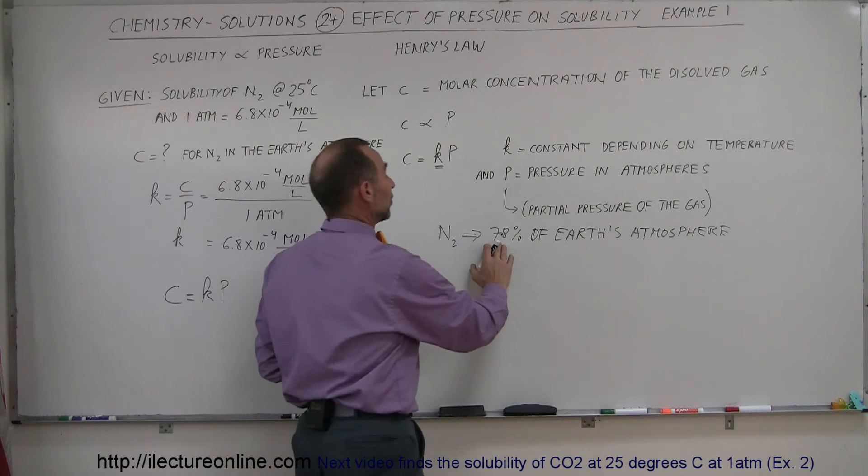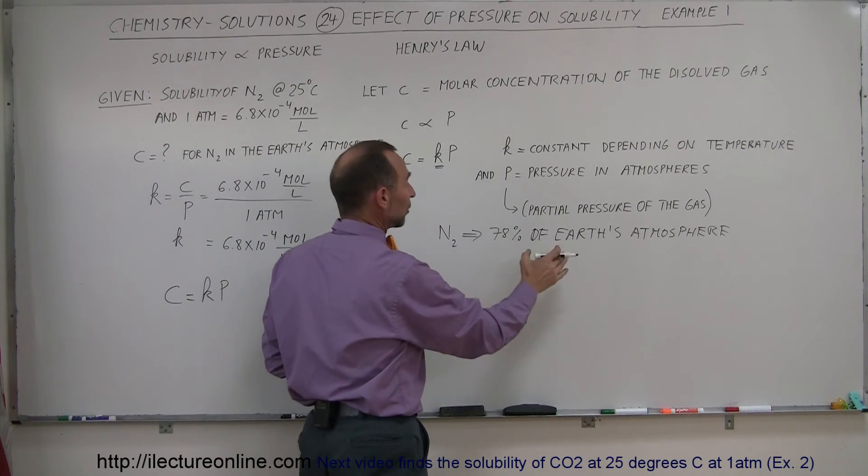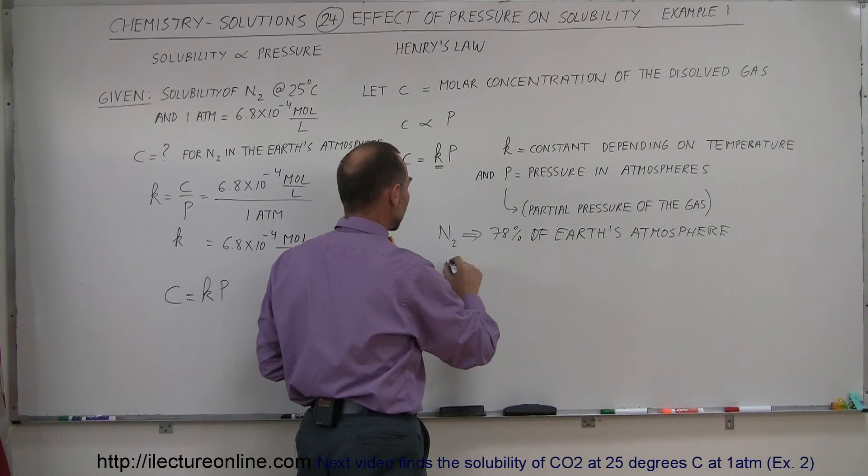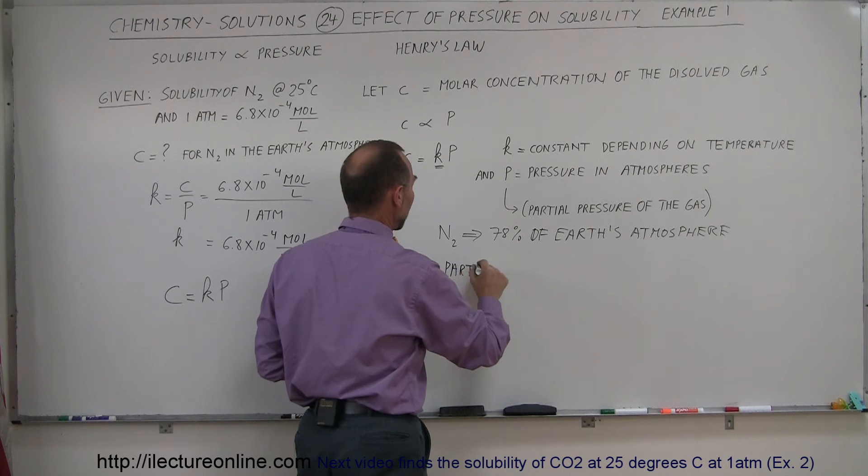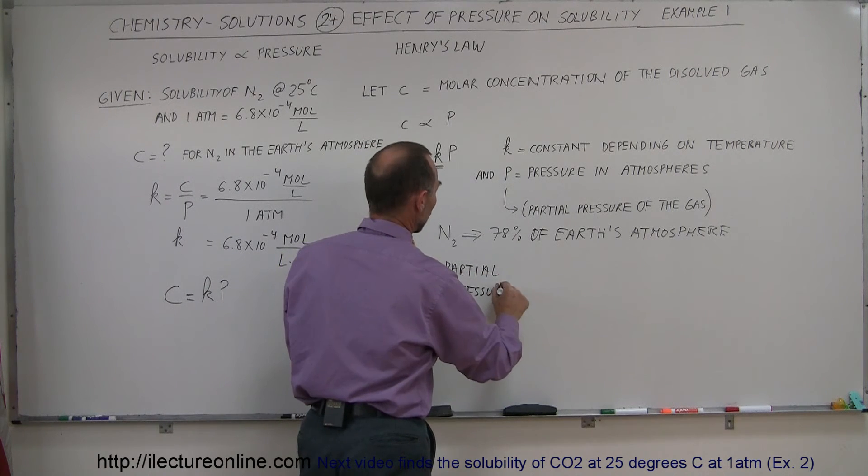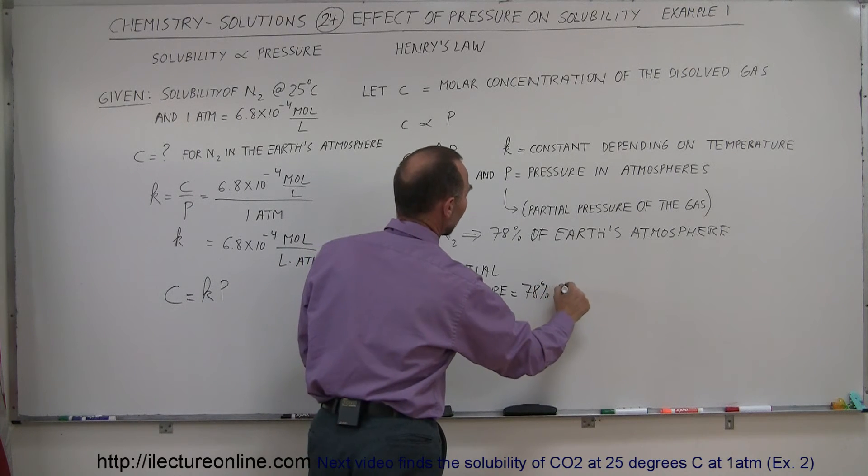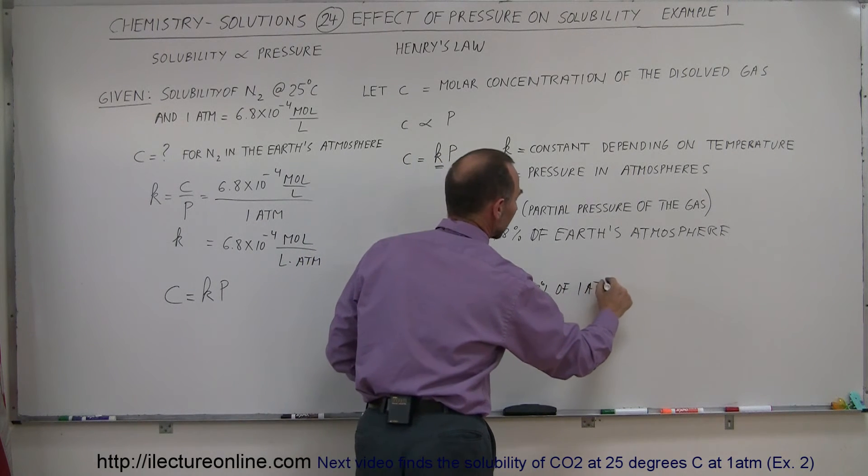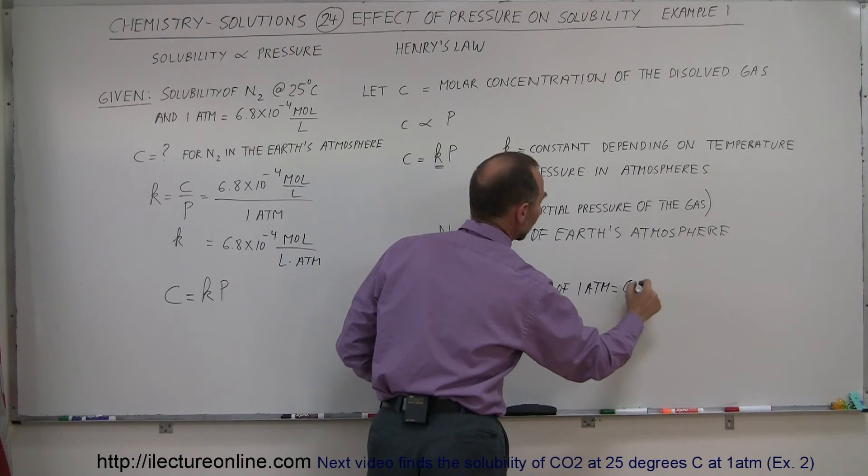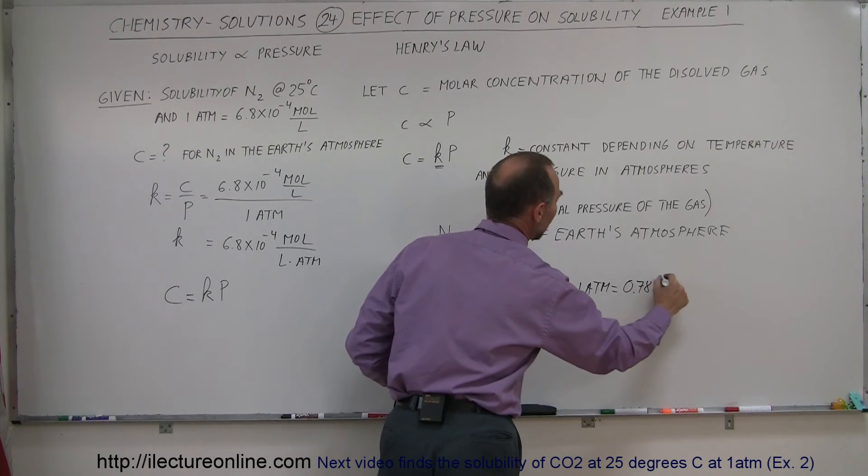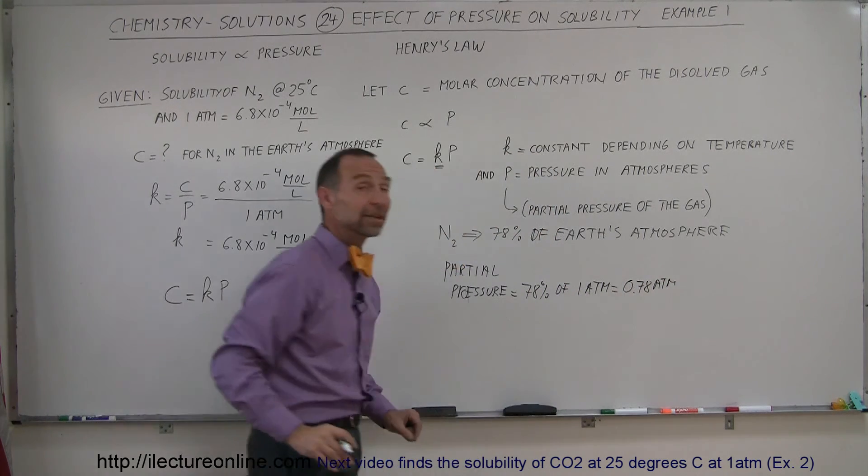Since 78% of the Earth's atmosphere is nitrogen gas, that means that the partial pressure of nitrogen gas will be equal to 78% of one atmosphere, which equals 0.78 atm. So that would be the partial pressure of nitrogen gas in the atmosphere.